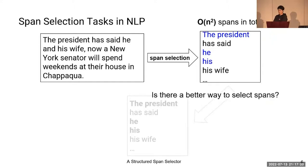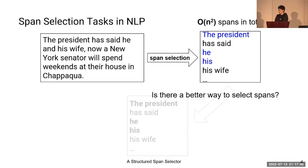The second problem to tackle is how to model the underlying structure of these spans in a specific task. The spans that we are interested in have many properties in common. For example, in coreference resolution, we need to extract all the noun phrases and pronouns. This greedy method is obviously non-optimal and misses out a lot of structural information of the spans. In this work, we provide a more linguistically informed way to select these spans.